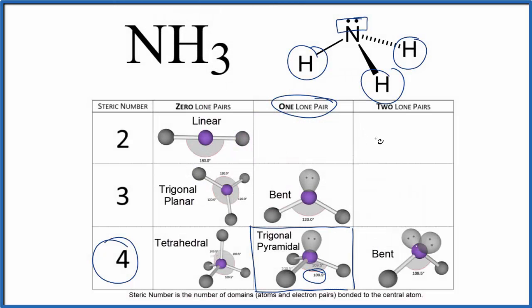We could also figure out the molecular geometry for NH3 by using the AXN notation. A, that's the central nitrogen. X, the number of atoms bonded.